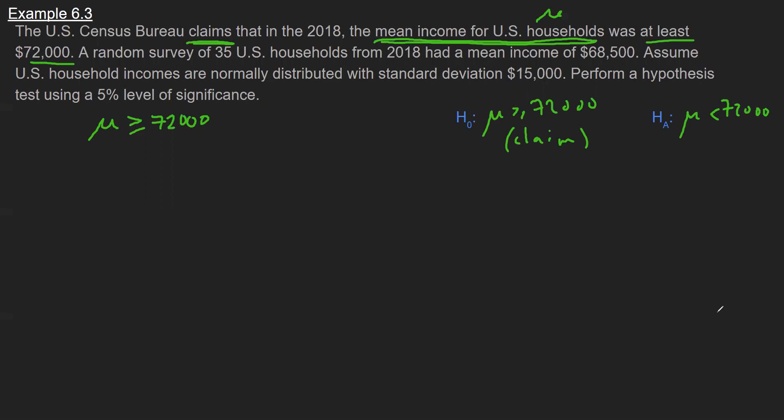Now to do all these examples we have to have data. So I'm going to now continue reading and pick apart what's the data we're going to use to test this. So now we have a random survey of 35 households - that's our sample size, n - had a mean income of $68,500.